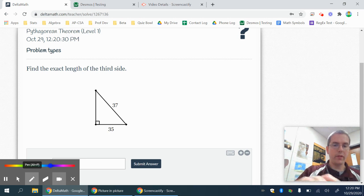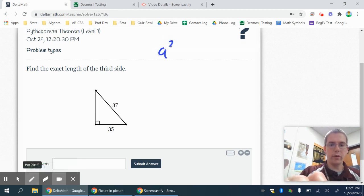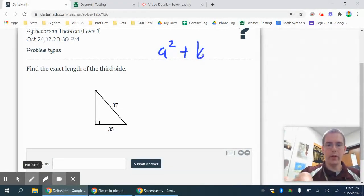First one, Pythagorean Theorem. Pythagorean Theorem, simply put, is A squared plus B squared equals C squared.